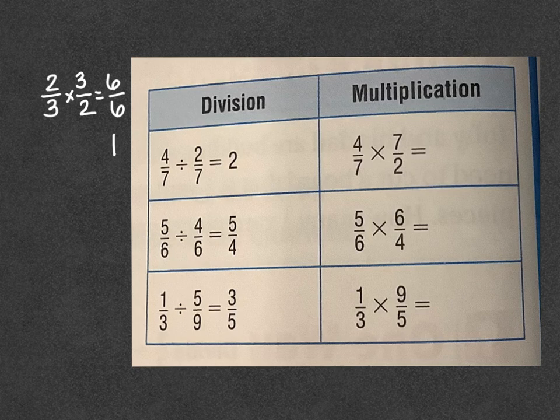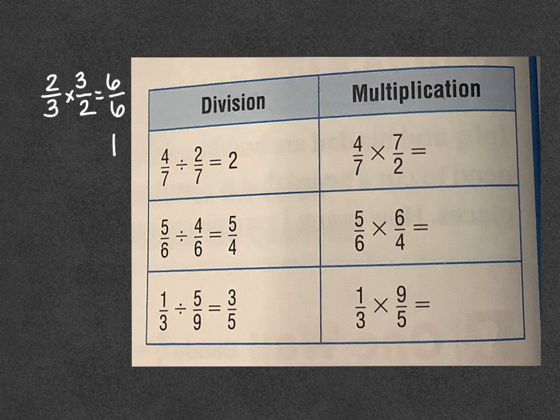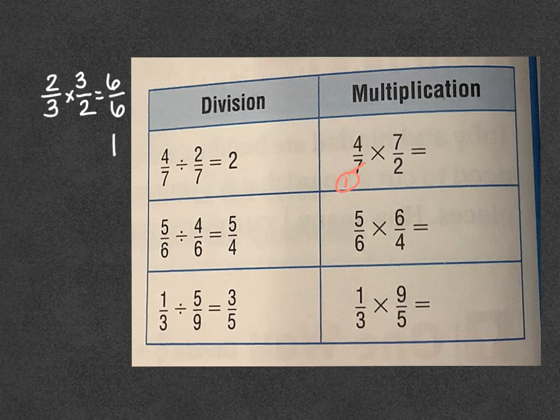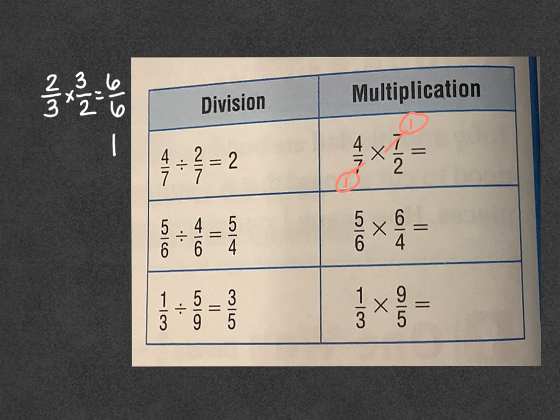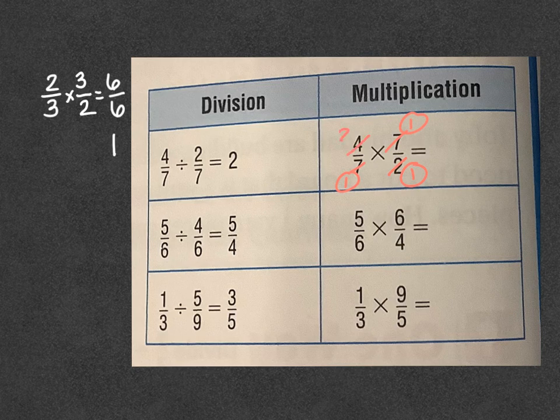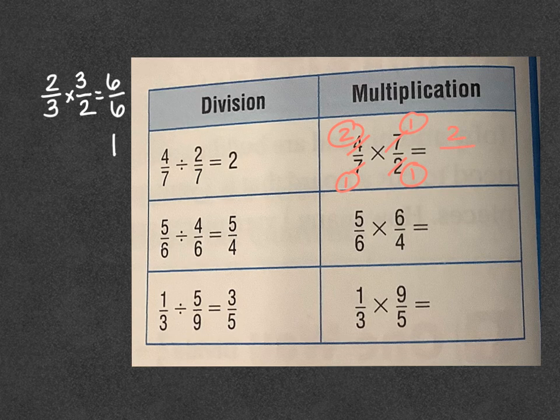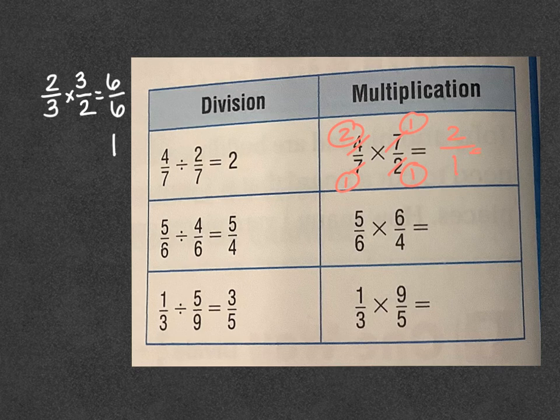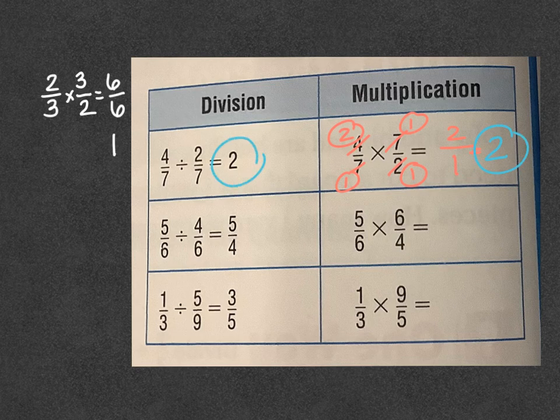So we are going to cross-reduce. Reduction here, well, 7 divides evenly into both of those, so that's nice and handy. 7 goes into 7 once and into 7 once. And here, let's check that reduction. Oh yeah, 2 goes into both of those. 2 goes into 2 once, and 2 goes into 4 two times. Multiply straight across: 2 times 1 is 2, and 1 times 1 is 1. And so 2 divided by 1 is 2. What just happened? Did you do magic?